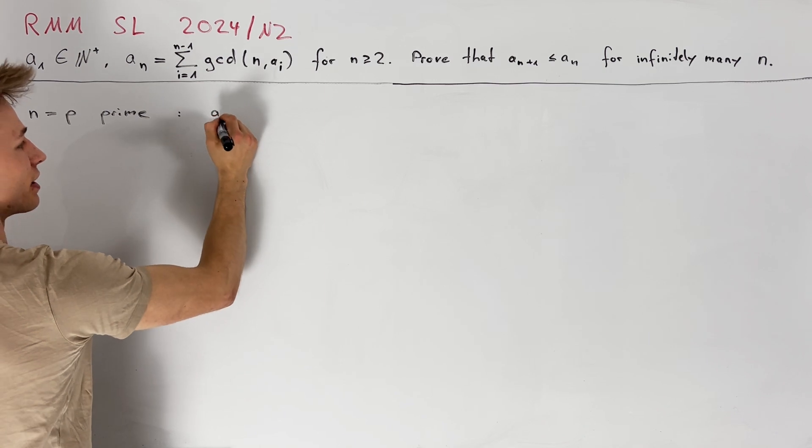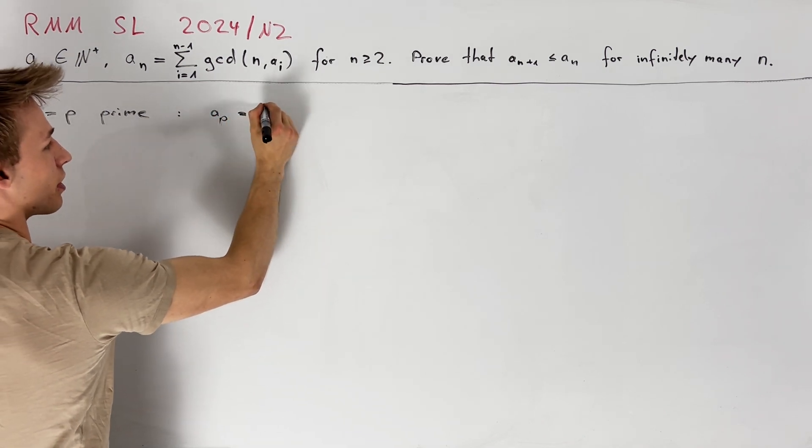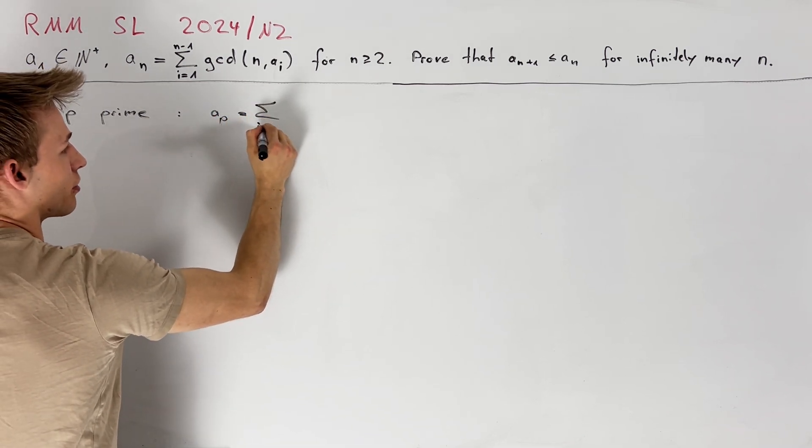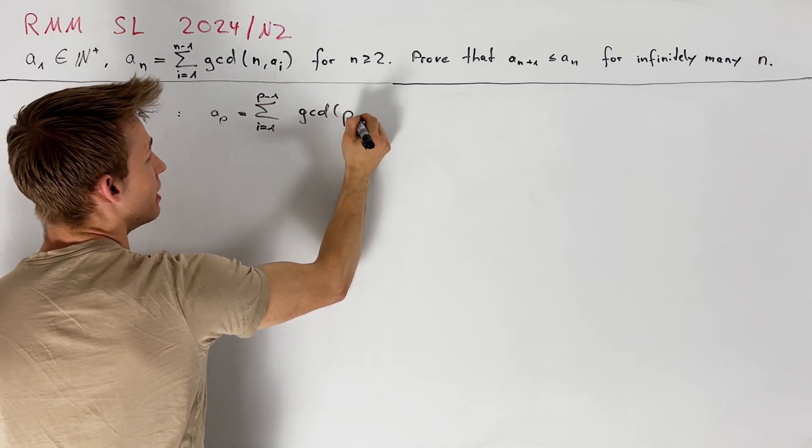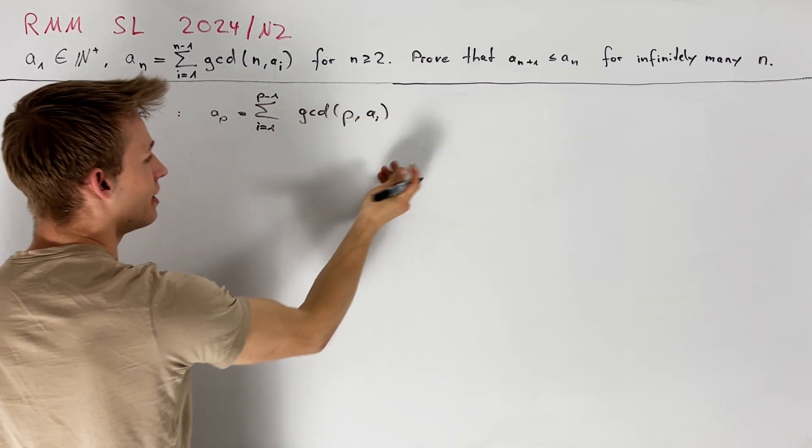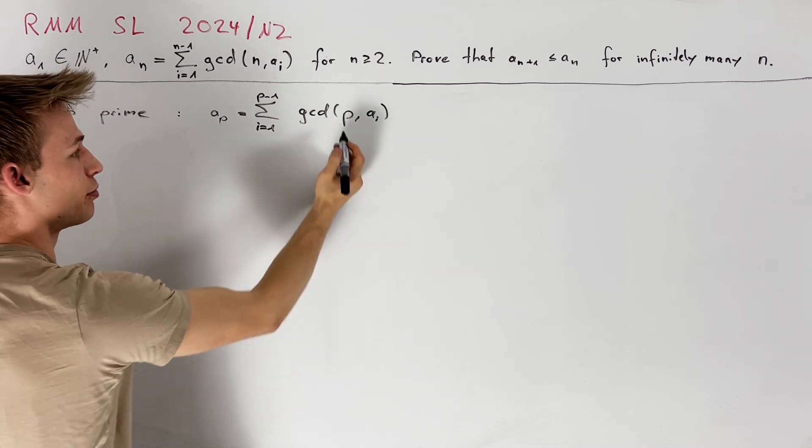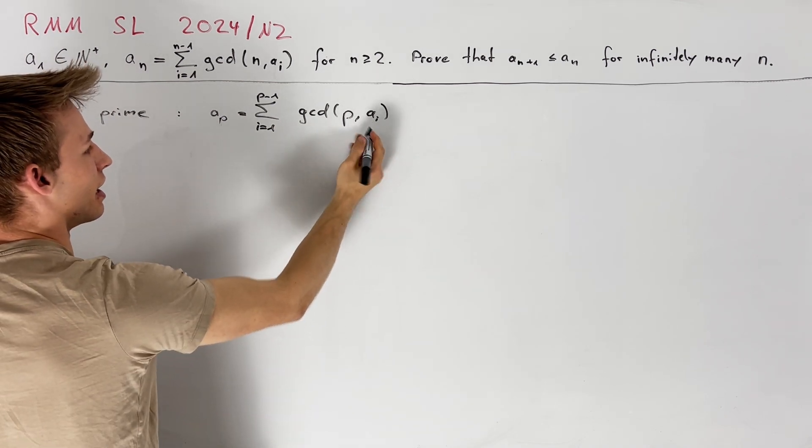To be more precise we have that a_p is equal to the sum going from i equals to 1 to p minus 1 of the greatest common divisor of p and a_i. And now this greatest common divisor is equal to p if p divides a_i and 1 otherwise.